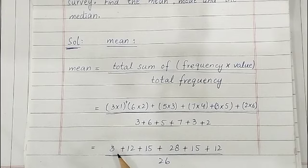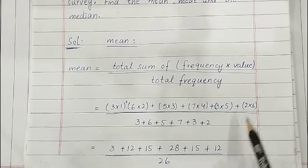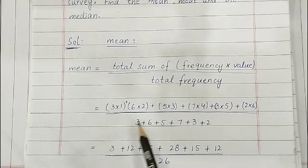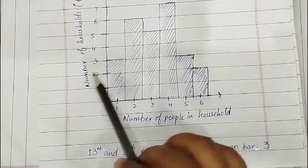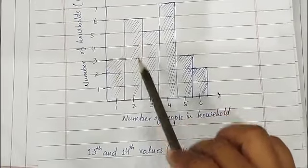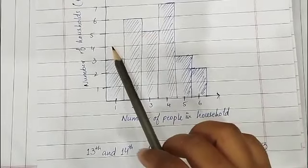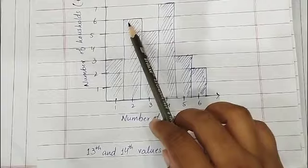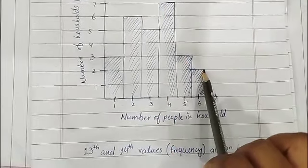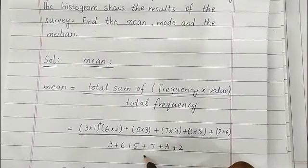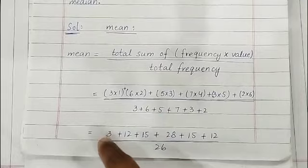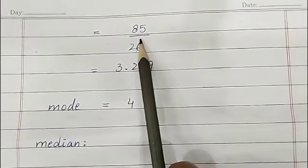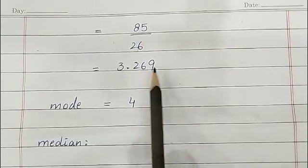Computing each product: 3 × 1 = 3, 6 × 2 = 12, 5 × 3 = 15, 7 × 4 = 28, 3 × 5 = 15, 2 × 6 = 12, all added together. The total frequency is 3 + 6 + 5 + 7 + 3 + 2 = 26. The sum of all the products is 85. So 85 divided by 26 gives the mean, which is 3.269. This is your mean of all the values given in the histogram.